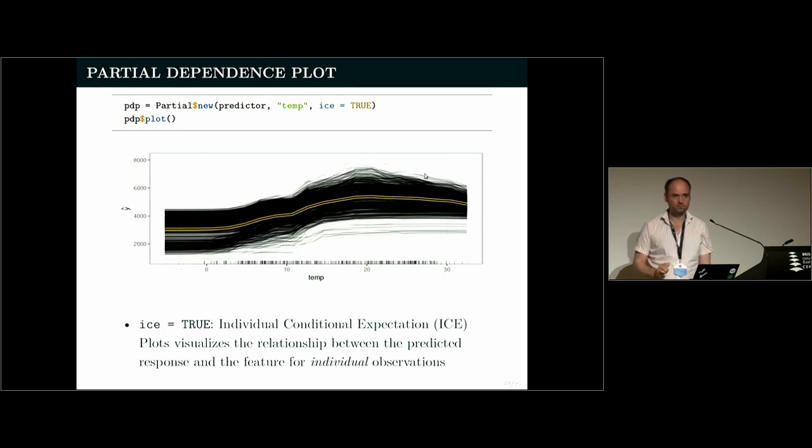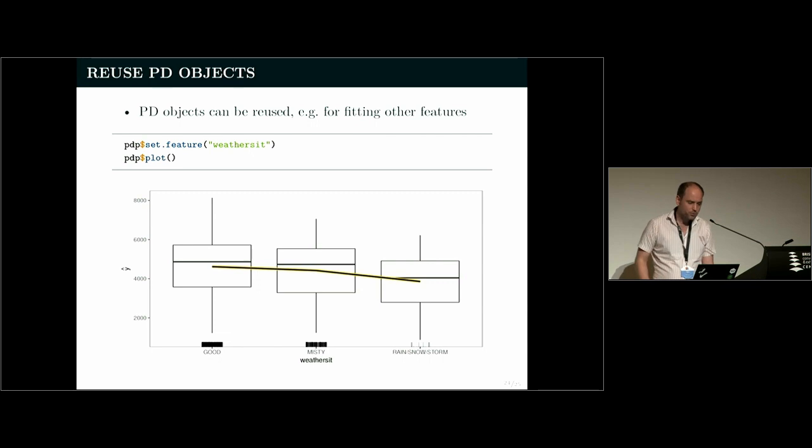The ICE plots are not unimportant because this average for the PDP can sometimes be a bit misleading. And you can kind of see the variation also whether there's heterogeneous structure going on if you plot these individual curves as well. So it's probably a good idea to do this. You can also reuse this and plot other features. And you can also see here that this is implemented for categorical features as well. So this is the influence of the weather situation, whether it's good misty or even rainy, snowy or stormy. And this produces now box plots and this average curve here again for the PDP curve.